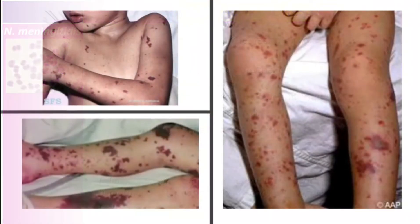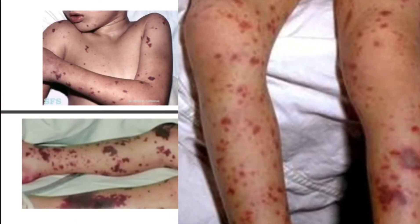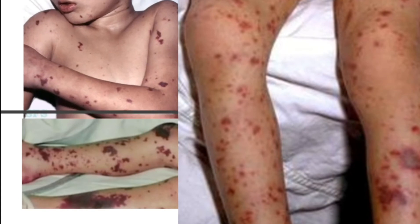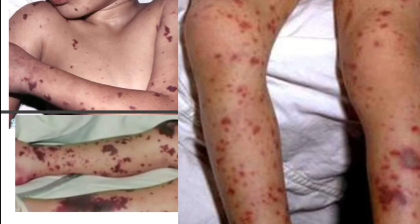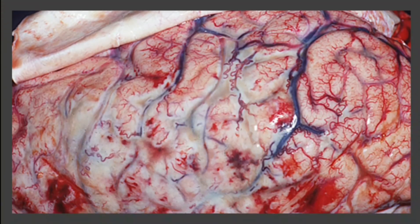Here are some images — you can see the petechial rash, and also the brain meninges showing hemorrhage on the meninges.